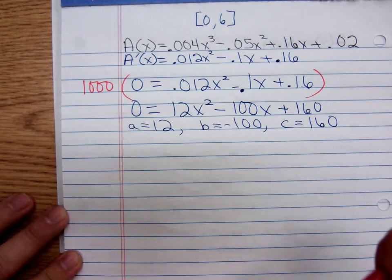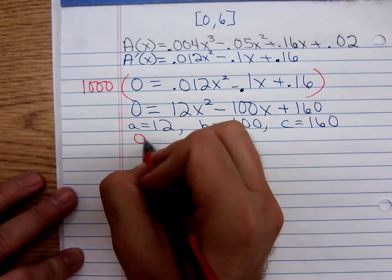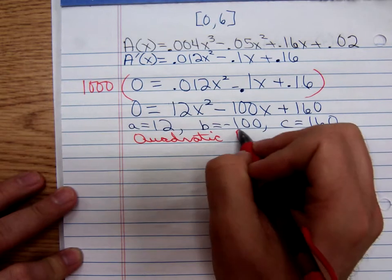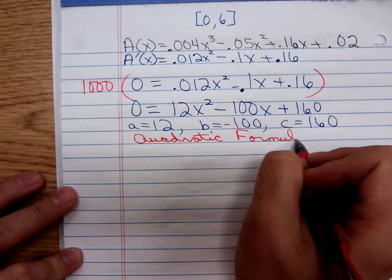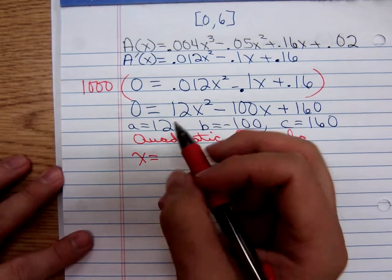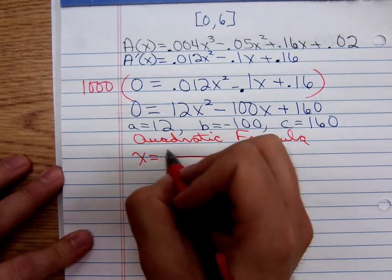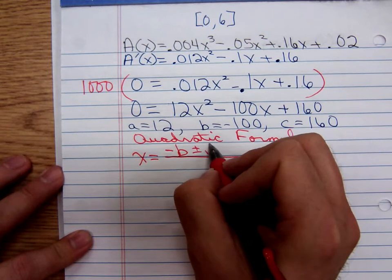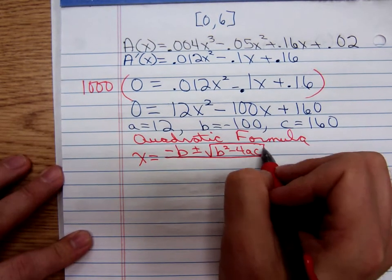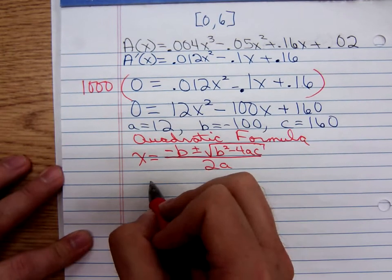I'm just going to use 12, negative 100, and 160, because when you're doing a similar problem, odds favor you won't have a common factor you can get rid of anyway. So a is 12, b is negative 100, and c is positive 160. Y'all recall the quadratic formula? I'll write it down.